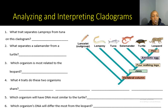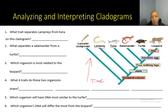Now let's analyze and interpret cladograms together. Number one: what trait separates lampreys from tuna? Here's the lamprey and here's the tuna. As we move up this cladogram, they have a vertebral column in common, but they do not have jaws in common — lampreys do not have jaws but tunas do. So the trait that separates them is jaws.